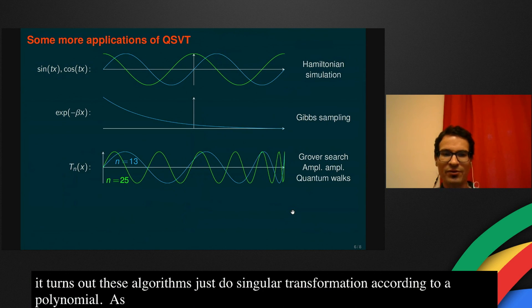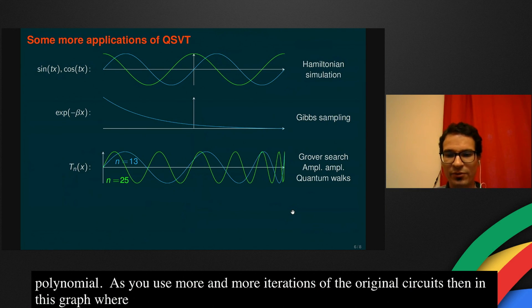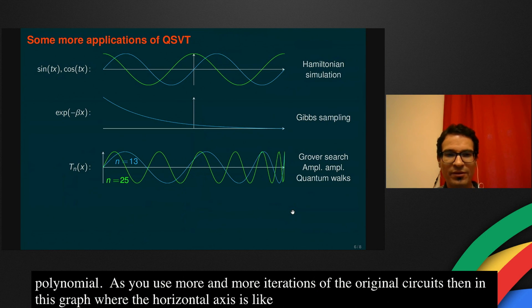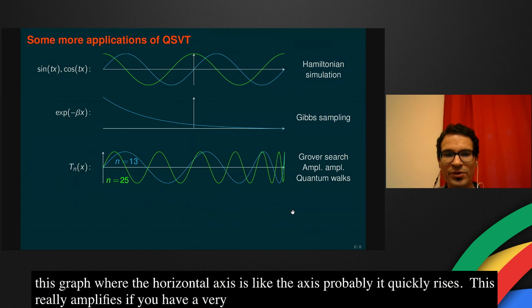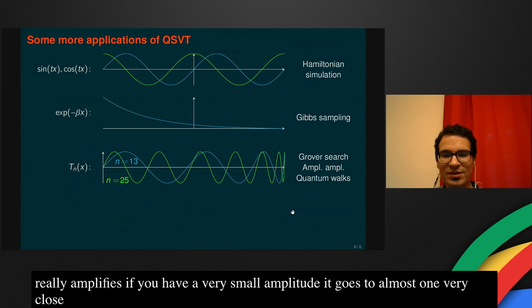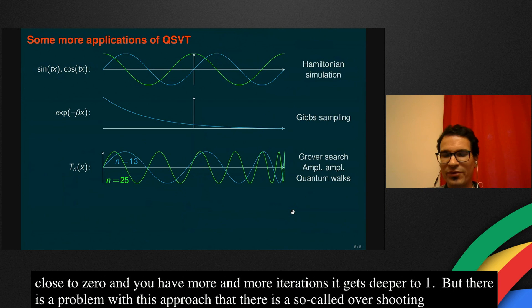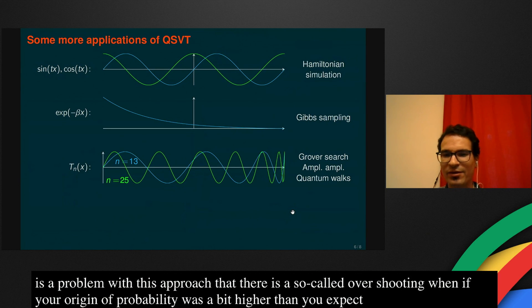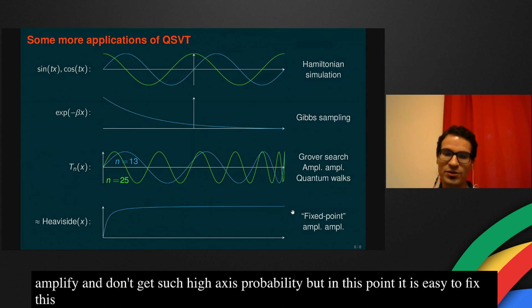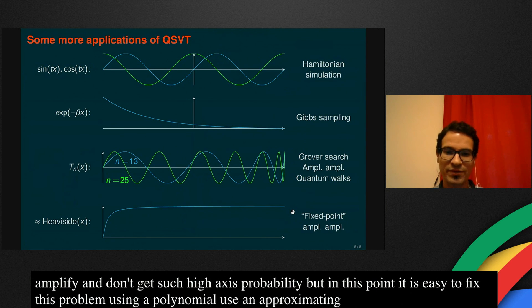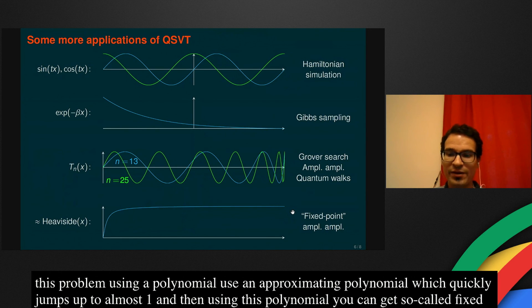You can see, as you use more and more iterations of the original circuits, then in this graph where the horizontal axis is like the amplitude of the original success probability, then it quickly rises. So this really amplifies. If you have a very small amplitude, then it goes to almost one, very close to one. And as you have more and more iterations, it gets steeper to one. But there is a problem with this approach that there is a so-called overshooting, when if your original probability was a bit higher than you expected, then you might actually over amplify and you don't get such a high success probability. But in this point of view, it's very easy to fix this problem. Instead of using a Chebyshev polynomial, just use an approximating polynomial which quickly jumps up to almost one. And then using this polynomial, you can get a so-called fixed-point amplitude amplification algorithm, where there is no risk of overshooting.